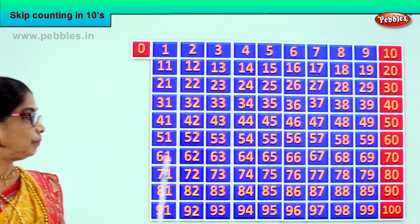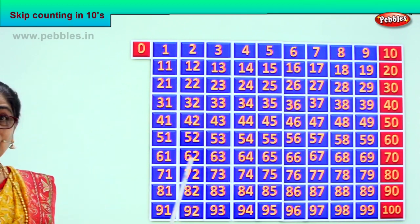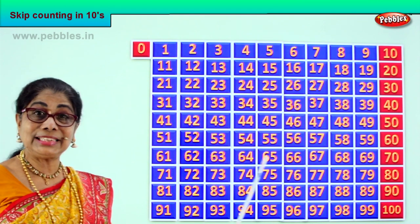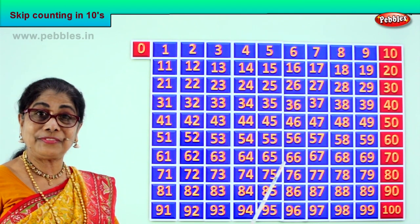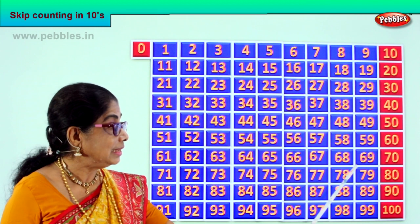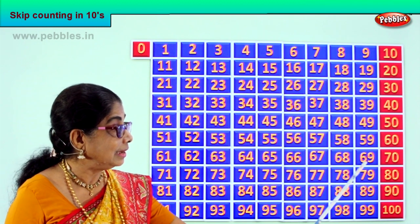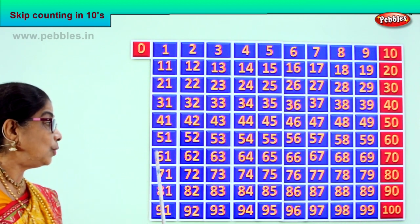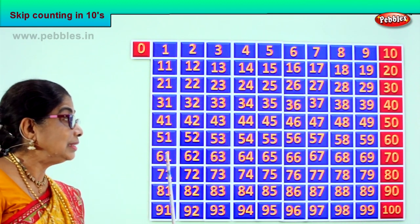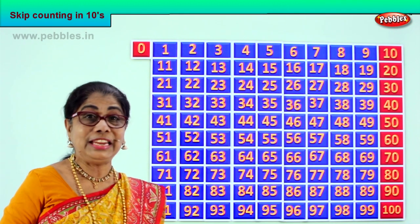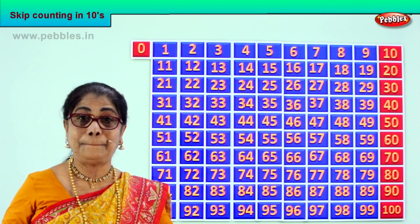Next: sixty-one, sixty-two, sixty-three, sixty-four, sixty-five, sixty-six, sixty-seven, sixty-eight, sixty-nine, seventy. So after sixty, sixty-one to seventy we jump. Another.